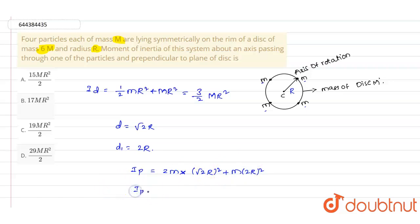We can write this as I_p equals, after simplifying we will be getting 4mR² plus 4mR²...